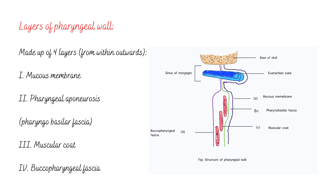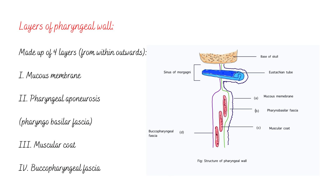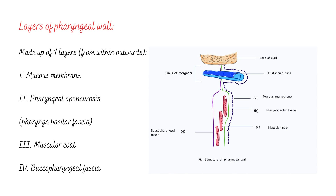Layers of the pharyngeal wall: it is made up of four layers from inside to outside. Number one, mucous membrane. Number two, pharyngeal aponeurosis, also called the pharyngobasilar fascia. Number three, muscular coat. Number four, buccopharyngeal fascia. You can see the structure of the pharyngeal wall divided into these four parts.